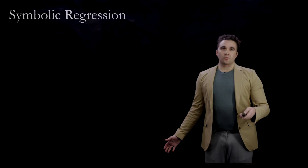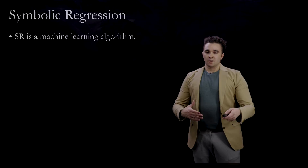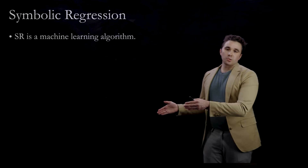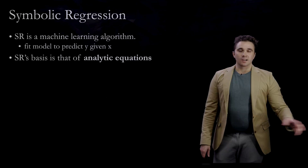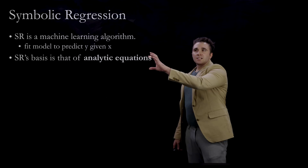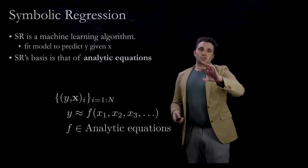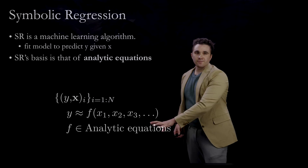What is symbolic regression? It is a machine learning algorithm used for regression problems — we want to fit the relation between an input set of features and an output set of features. Traditionally in machine learning you have a model that depends on many parameters and you fit those parameters, but in symbolic regression you're actually fitting the space of analytic expressions.